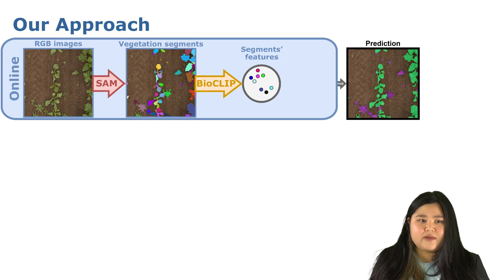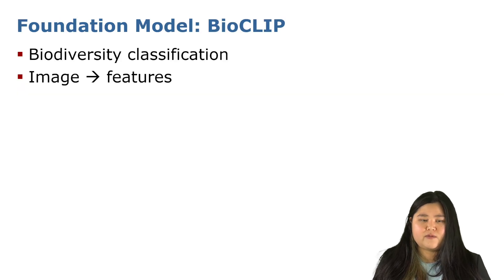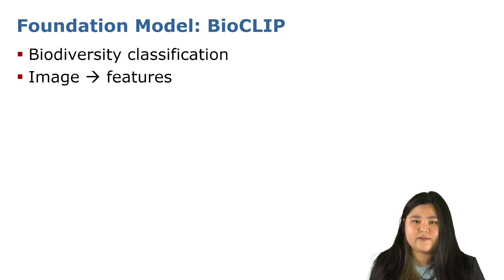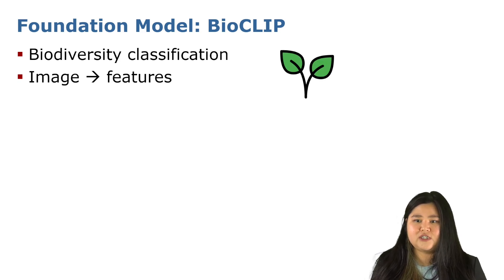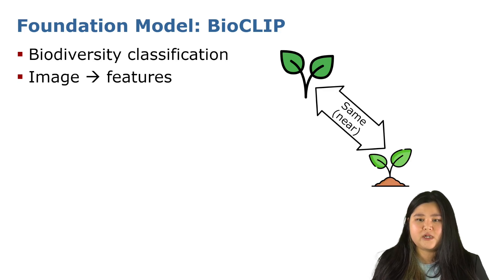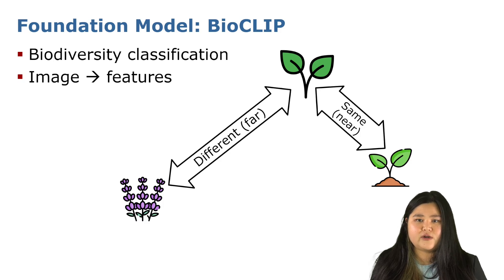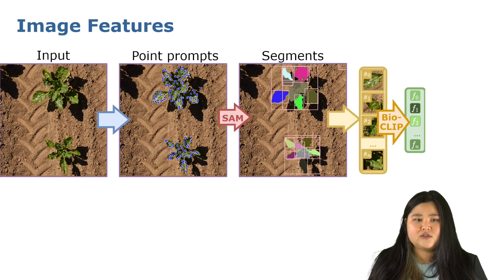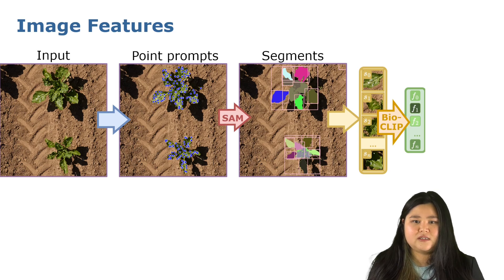Once we have the SAM segments, we then map them into the feature space of BioClip. BioClip is another foundation model that is trained specifically for biodiversity classification. For our use case, we are only interested in the ViT image encoder of BioClip to map our images into its feature space. In the BioClip feature space, we can compare the vegetation segments, since features from the same species should be close together, and features from different species are further away. So from the vegetation segments from SAM, we map each segment into the BioClip feature space, and then we must distinguish the crop features from the weed features in this space.